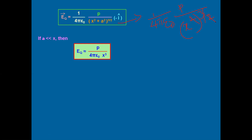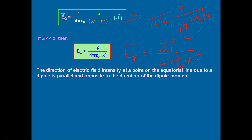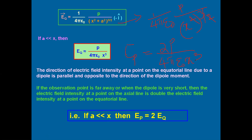If you recall the equation for Ep — electric field at the axial point for a short dipole discussed in the previous video — it was Ep = 2p / (4πε₀x³). Comparing these two equations, when a << x, we get Ep = 2·Eq. That is, the electric field due to an electric dipole at the axial point is 2 times that at the equatorial point — which holds true only for an ideal dipole.